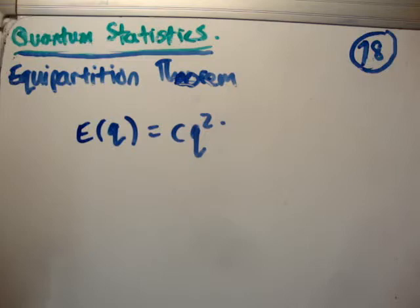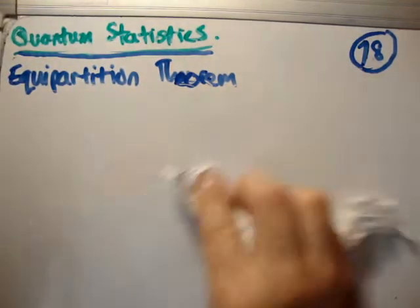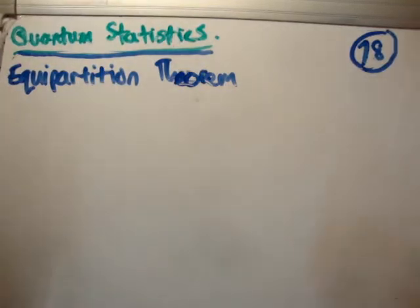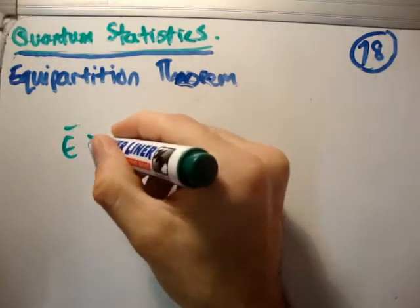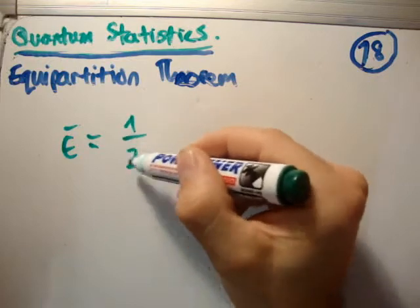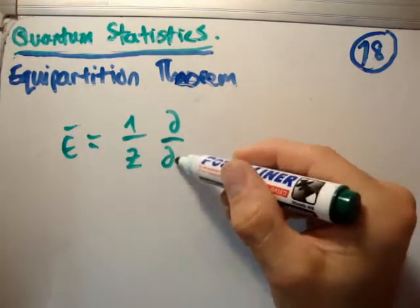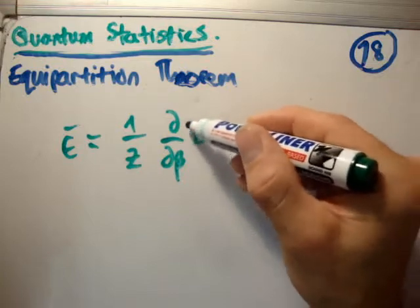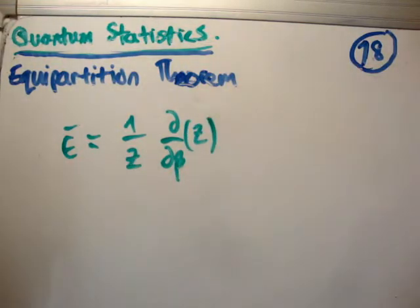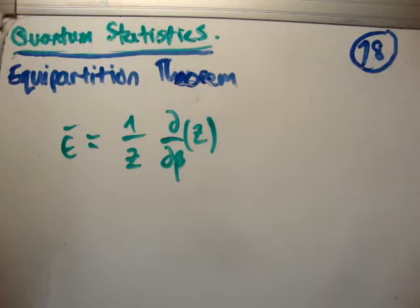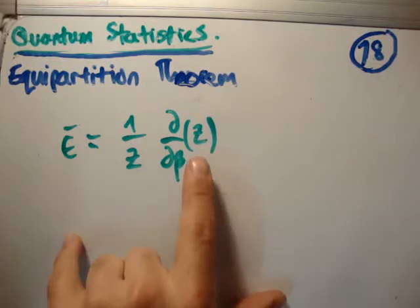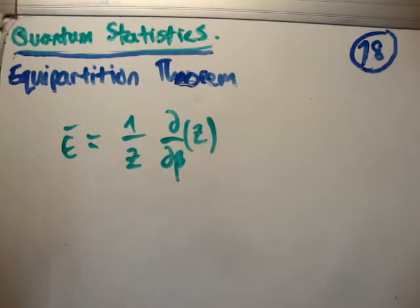So let's move on from there. Now, in order to do this, what we're going to do is we're going to use the fact that the average energy of any system is equal to 1 over the partition function times del del beta of the partition function. That is something which I haven't proved in a video yet, but I will do in a future video. And it's a very important and useful formula. So that means we need to get the partition function for this particular system. So let's go ahead and do that.